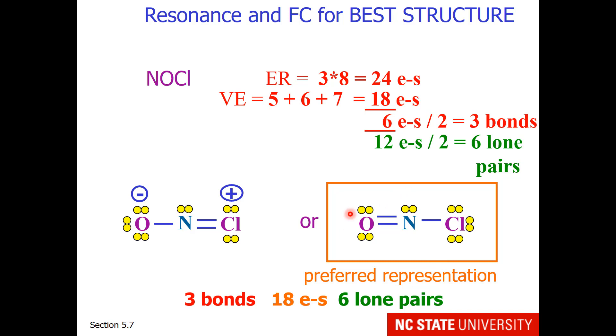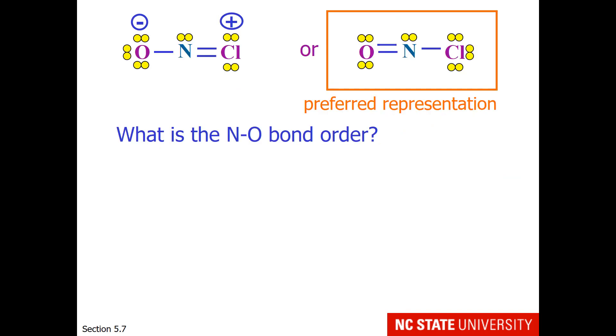So this is somewhat like thinking of the energies of the different representations. If I have a y-axis with energy, the structure on the left is at higher energy than the structure on the right. Therefore, the structure on the right is the preferred representation. So if one is asked what is the NO bond order in NOCl, use only the preferred representation.